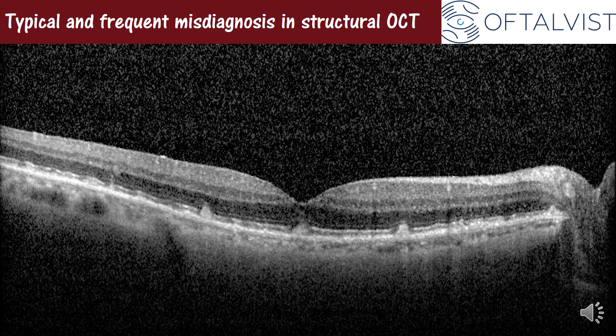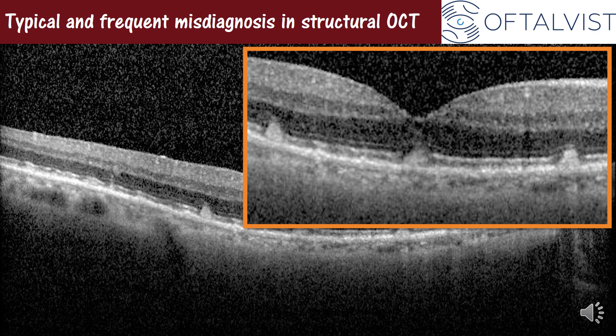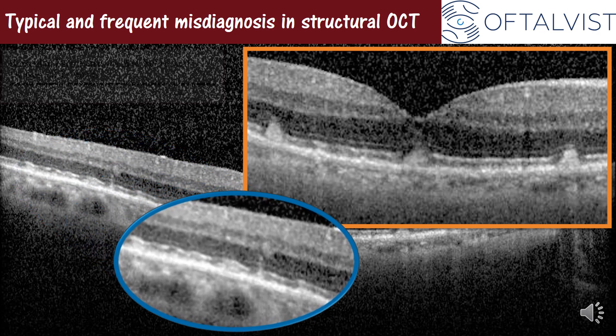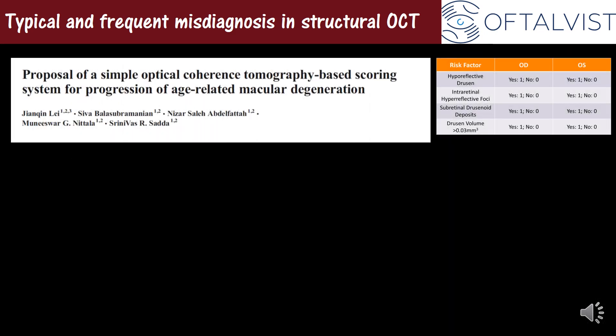The phenotyping classification of the drusen type is highly relevant. It might be easy to identify sub-retinal drusenoid deposits in some cases, but it is not easy to recognize them in others, given the progressive staging described years ago by Zweifel and co-workers in their landmark publication. Recognizing the type of deposit present in a certain case of AMD is as relevant as shown by Sara and co-workers in their proposal for a scoring system of risk of progression in age-related macular degeneration.